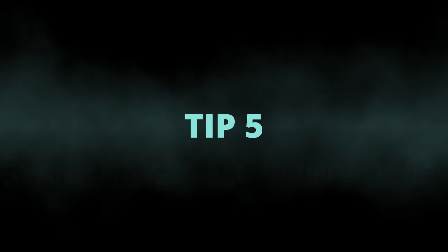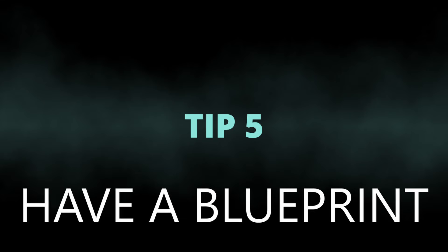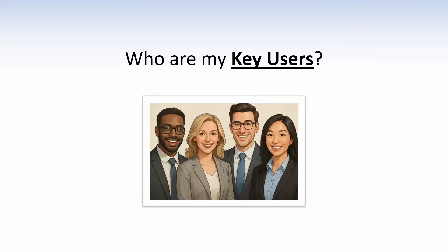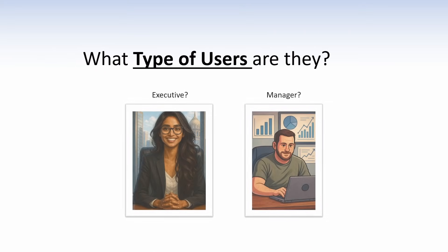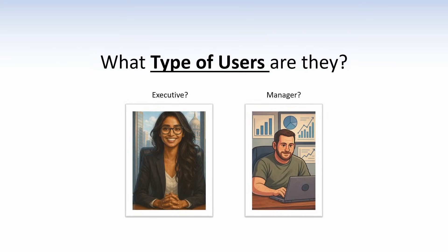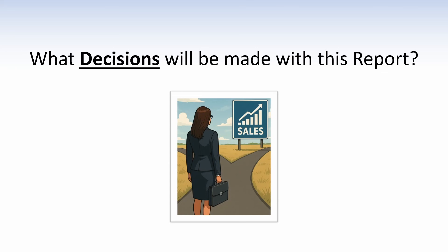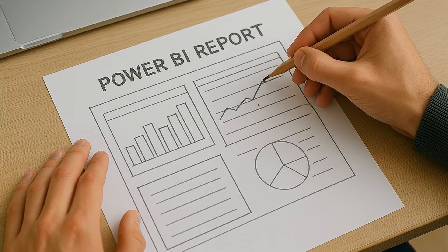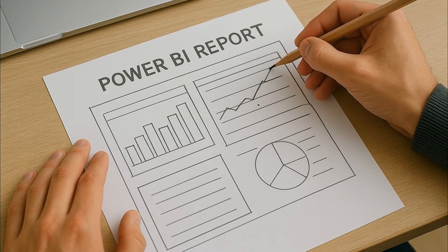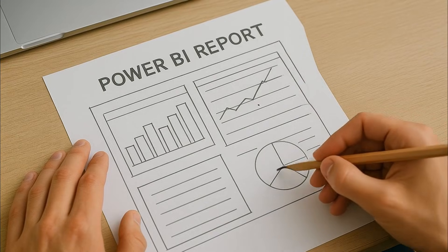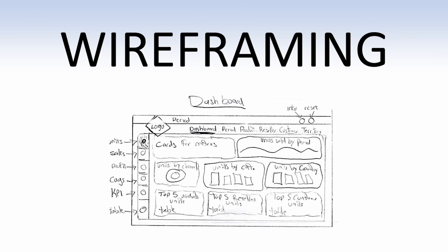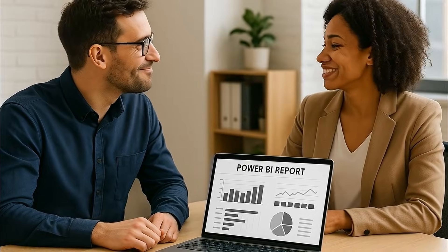Tip number five: follow a proven blueprint. Before creating a Power BI report, take the time to identify your audience and what their needs are so you can plan the right solutions. Once you have a plan, sketch your report out with key UX principles in mind — this is called wireframing. Then review that mockup of the report with the key users in advance of building.